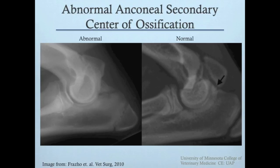A larger single ossified anconeal process fragment with a wider separation from the ulnar metaphysis is characteristic of an ununited anconeal process. Comparing the appearance of the abnormal anconeal process on the left with the normal secondary center of ossification on the right demonstrates this subtle but important difference in appearance.